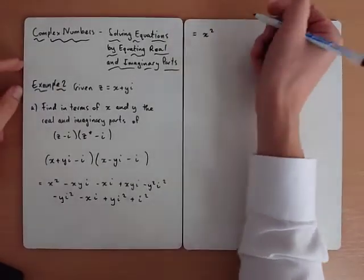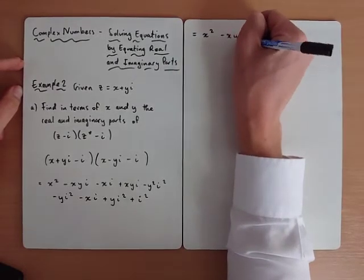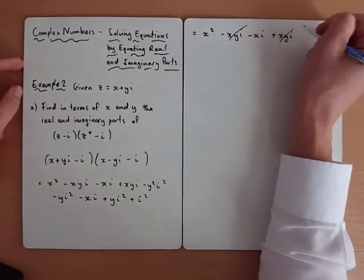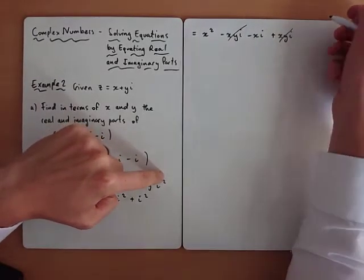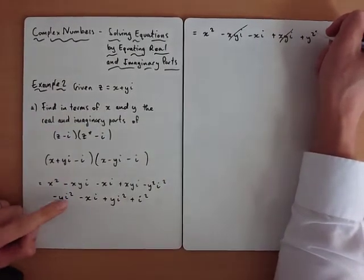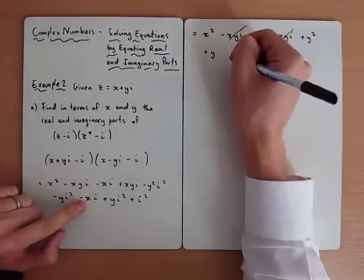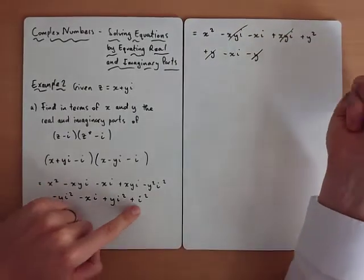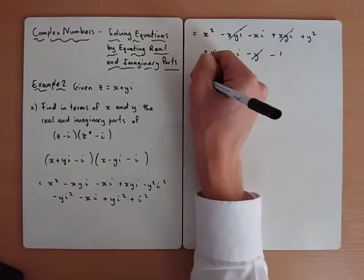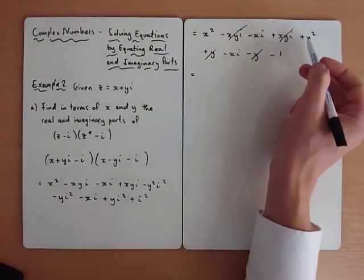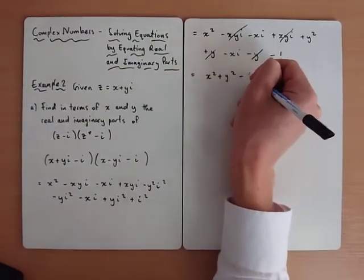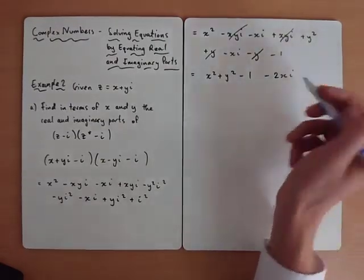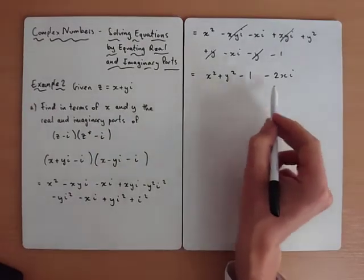After expanding, notice that some xy terms cancel. Replacing i squared with minus 1: minus y squared times minus 1 gives plus y squared; the minus 1 terms give plus y; minus xi remains; and minus i squared gives plus 1. Collecting real and imaginary parts: the real part is x squared plus y squared minus 1, and the imaginary part is minus 2x.